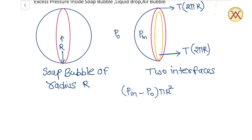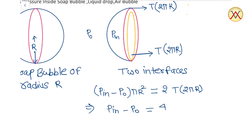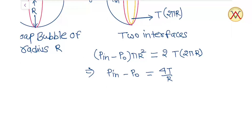This is the force acting towards left. This should be equal to the force due to surface tension, which is 2 times T into 2πr. Therefore, Pn minus P0 equals 4T by r. This is called the excess pressure inside a soap bubble: 4T by r.